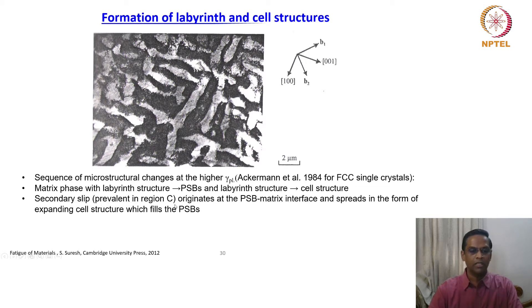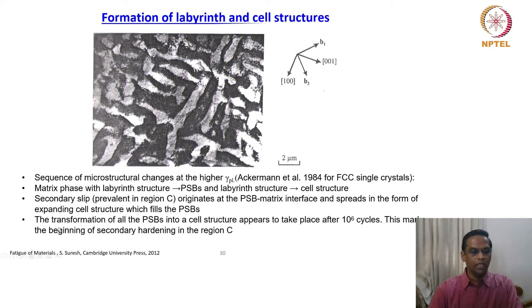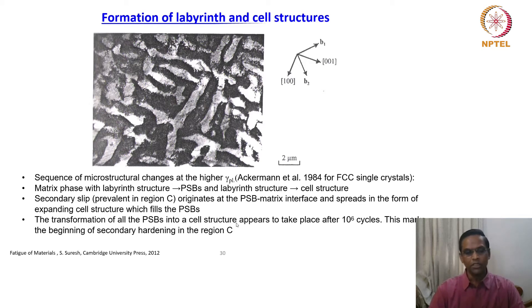Secondary slip is prevalent in region C because of the high plastic strain. Secondary slip originates at the PSB-matrix interface and spreads in the form of an expanding cell structure which fills the PSB. The transformation of all PSBs into cell structure appears to take place after 10⁶ cycles. This marks the beginning of secondary hardening in region C, where the stress-strain curve goes up slightly in the third stage — that is considered secondary hardening, happening after all PSBs dissolve into cell structures.